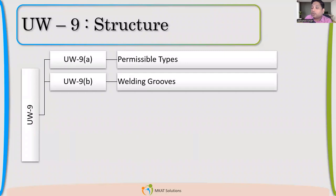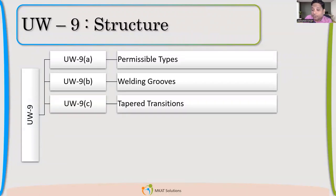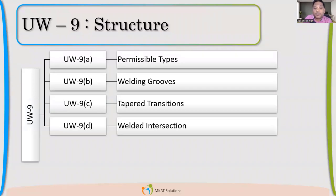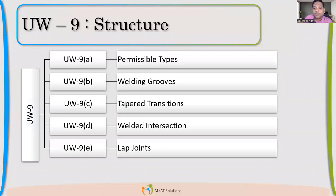UW-9A talks about what are the permissible types of welds. UW-9B talks about welding grooves. 9C talks about tapered transition. 9D talks about welded intersections, staggering of welds.